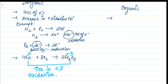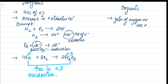For an organic chemist, oxidation is not seen in terms of electrons or oxidation number — that has less significance in organic chemistry. For an organic chemist, oxidation is generally seen in terms of gain of oxygen or loss of hydrogen.